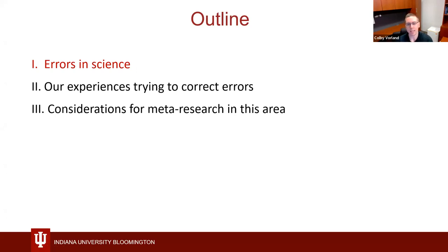In this talk, I'll discuss some examples of errors in scientific papers and our experiences trying to correct them, because I think these experiences may help in a couple of ways. One, they may inspire new research questions. Two, they may illuminate some considerations when coming up with a research question or the challenges you may face depending on the approach you take. And third, I'll briefly discuss a few meta-research projects related to errors and some additional considerations when doing this work.